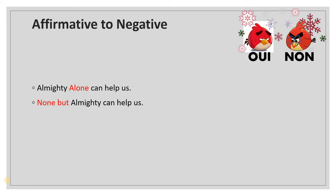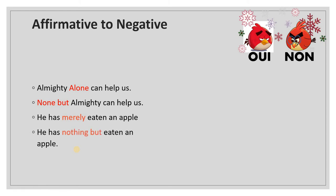'Almighty alone can help us' becomes 'None but Almighty can help us.' When the word 'alone' appears, it is affirmative and changes to 'none but.' Similarly, 'He has merely eaten an apple' becomes 'He has nothing but eaten an apple.' In affirmative, these are singular words — alone, merely, only — and in the negative sentence we use 'none but' for persons and 'nothing but' for things.